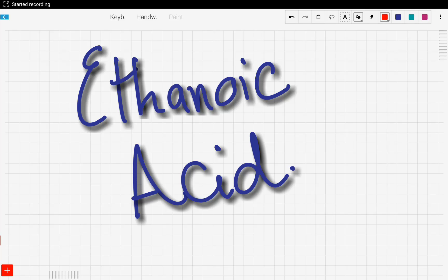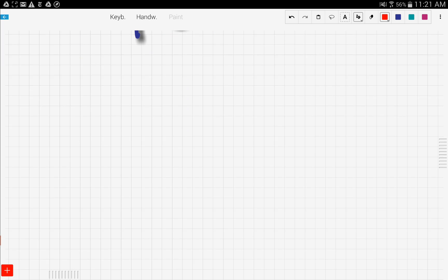In this video, we're going to focus on ethanoic acid and specifically talk about how to make ethanoic acid. Ethanoic acid belongs to the family of carboxylic acids and has the formula CH3COOH. It's a very weak acid. We make ethanoic acid using two different methods.